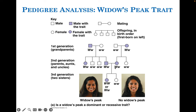Looking at the mom's side: mom has a widow's peak, one sibling doesn't, and her mom has it but her dad doesn't. The question is: is having a widow's peak a dominant or a recessive trait? The way to tell is to look at the heterozygotes — if individuals who are heterozygous display the widow's peak phenotype, then widow's peak must be a dominant trait.